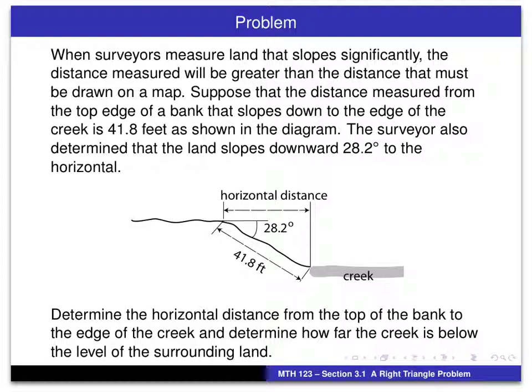So here's our problem. As you read this, notice that we're measuring the distance from the top edge of a bank down to the bottom edge by the creek there. That distance here is 41.8 feet, and surveyors would also have an instrument that they would be able to measure this angle with the horizontal. We have to assume that when we have a horizontal distance and then a vertical distance, in between those two form a right angle.